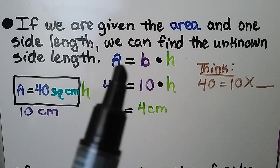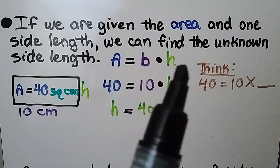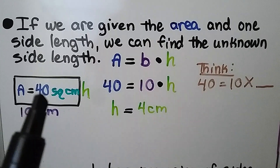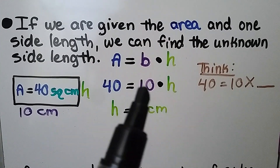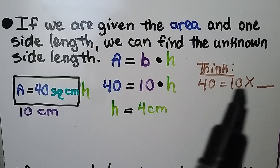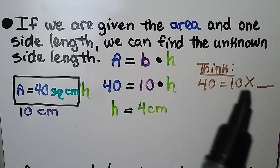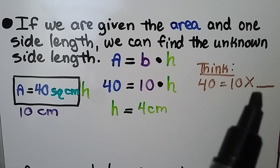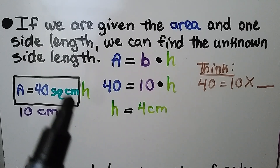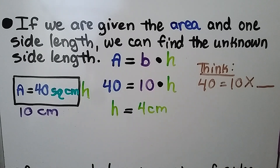With the formula area equals base times height, we think: we know it's 40, so 40 is equal to 10 times whatever the height h is. 40 is equal to 10 times some number — that would be 10 times 4. The height must be 4, and we write it as centimeters because we can see they're using centimeters as the measurement units.